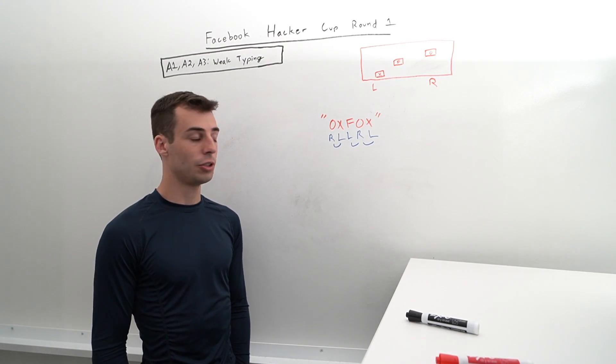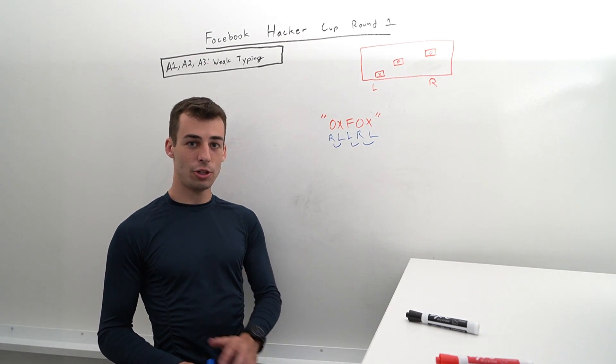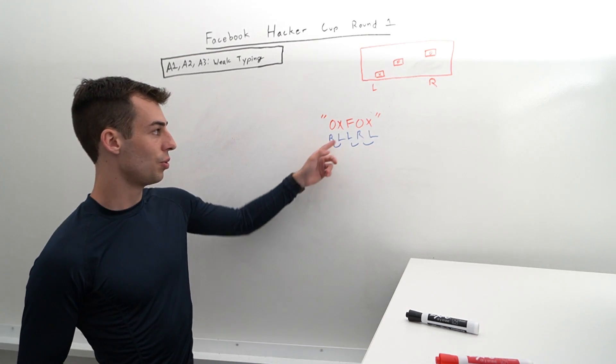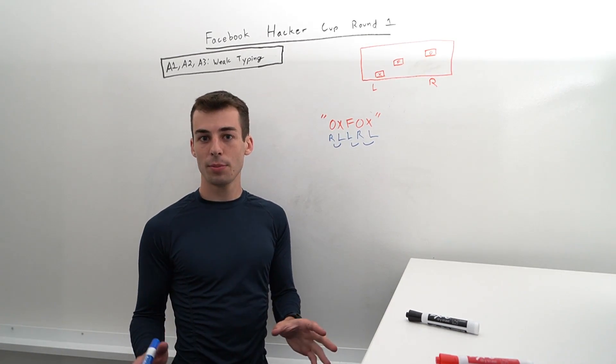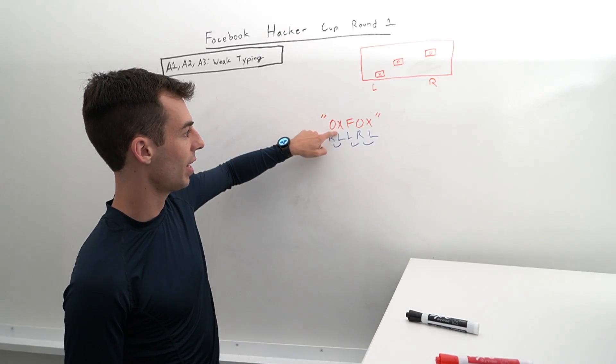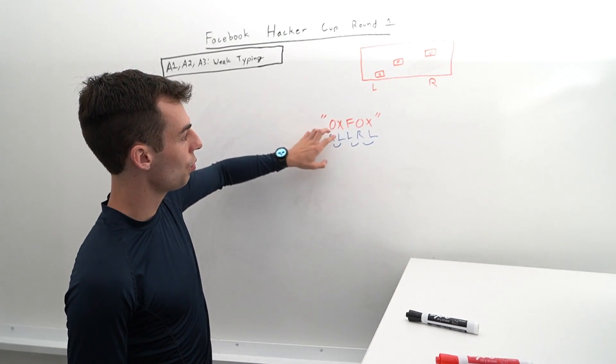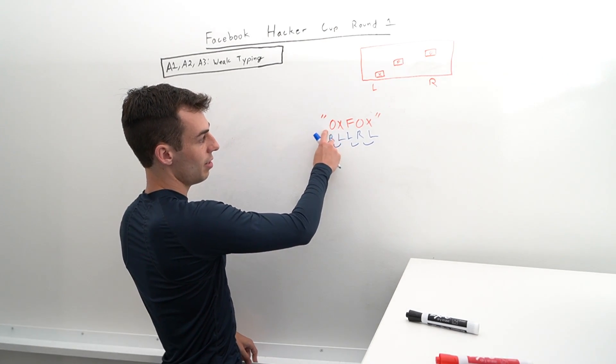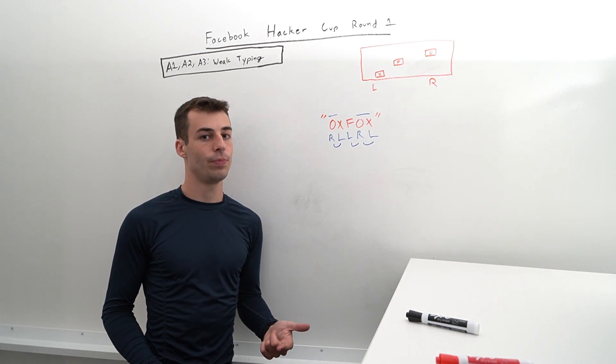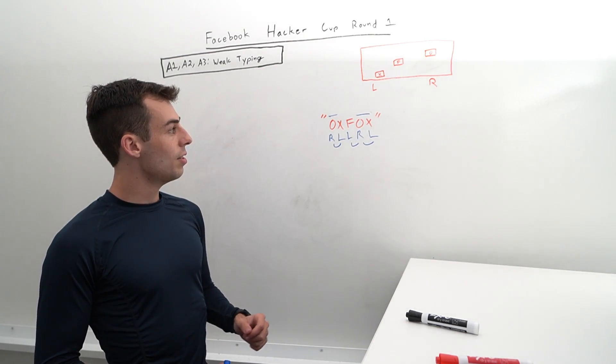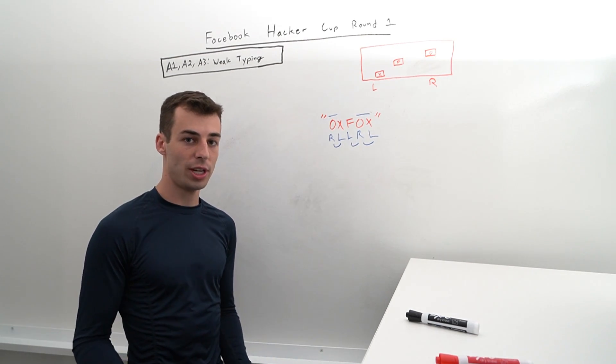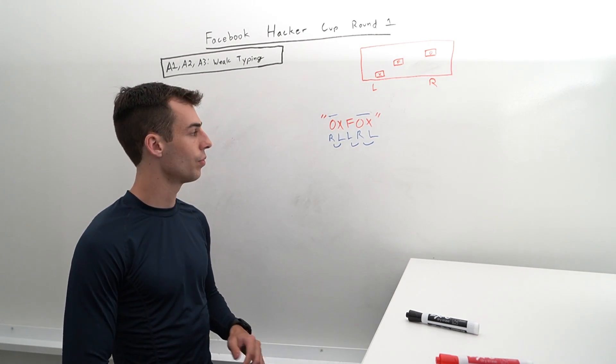A2 is a little bit more difficult because we're not interested in just this one string, we're interested in all possible substrings of this string. Not necessarily all possible unique substrings, but all possible substrings. So we want to type O, OX, OXF, and we want to type OX multiple times. We want to type it once for this substring, but also once for this substring. So we want to double count the number of times it's used. For each of these possible substrings, we want to know the total number of times we'll have to switch hands after typing all of them.